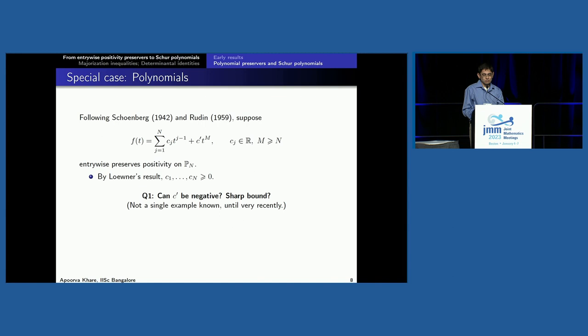Eventually we have an answer to the question. Yes, there do exist polynomials where C', the leading term, is negative, and we can compute the sharp bound. More generally, if you look at the coefficients of the degrees of the monomials above — a general polynomial doesn't need to start with degrees 0, 1, 2, 3, you can have any degrees — even then, Löwner's theorem applies, and you can prove that the first n non-zero coefficients must be positive. Can the next one be negative? Yes.